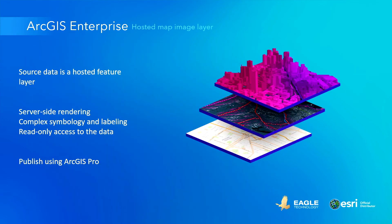A few key updates have been added for publishing and managing data in RGS Enterprise. A new layer type is the hosted map image layer. This is similar to the good old dynamic map surface, but with the data stored in a hosted feature layer. It allows for server-side rendering and can use complex symbology and advanced label settings. You'll need RGS Pro to publish this new layer type.